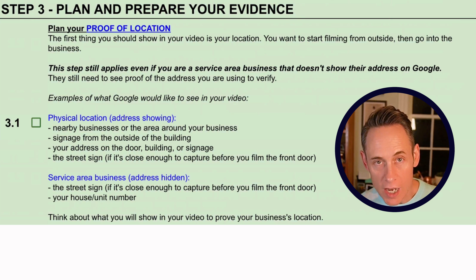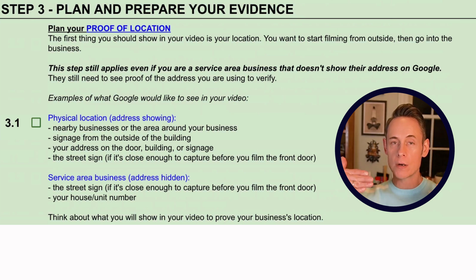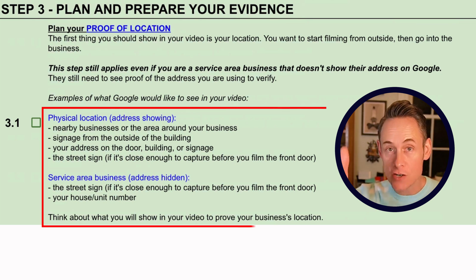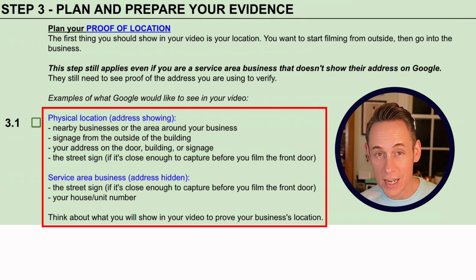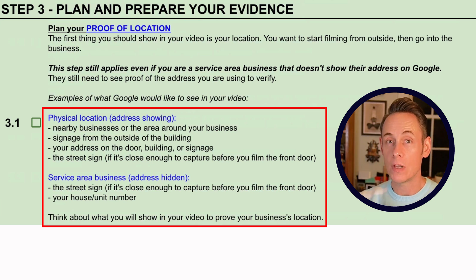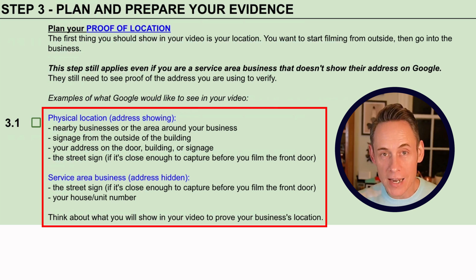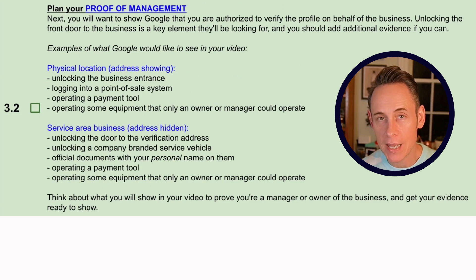Step three is planning what you're going to show in your video. There are four key components. First, prove your location — typically start from the street, show the building and surrounding buildings, then walk up and show the address on the actual building. If you can capture the street sign nearby without running away from the frame, include that too. Plan where you'll start your video and what you'll show.